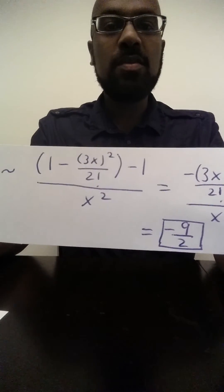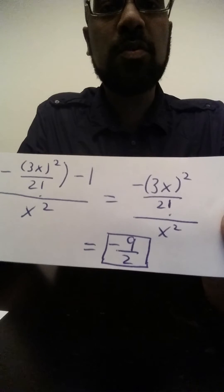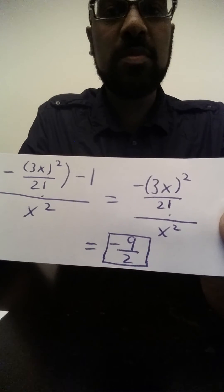And if we do that, we're left with a ratio of two polynomials of the same degree, and the negative 9 halves falls out immediately.